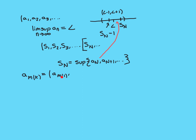I'm going to call that term of the sequence A_{M_1}. K denotes which entry in my subsequence you are: K=1 is the first term, K=2 is the second, K=3 is the third, etc. The function M(K) takes each K value and turns it into the index of that term in the original sequence. That's how I'm notating my subsequence. I've now told you how to find the first term A_{M_1}.